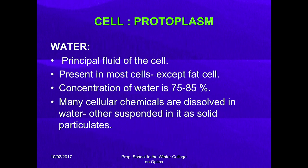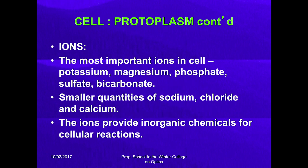The most important ions in the cell are potassium, magnesium, phosphate, sulfate, and bicarbonate, which help in digestion, respiratory systems, and other processes. Smaller amounts of sodium, chloride, and calcium are also present. These ions provide inorganic chemicals for cellular reactions. After water, the most abundant substance in most cells is proteins, normally constituting 10 to 20 percent of a cell.